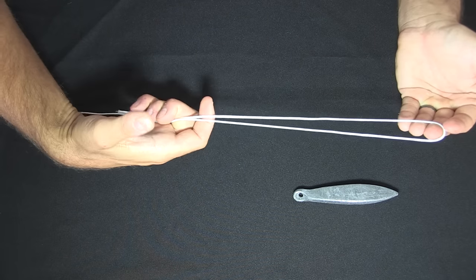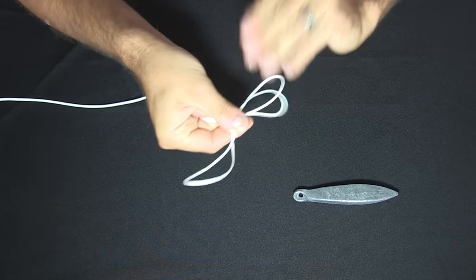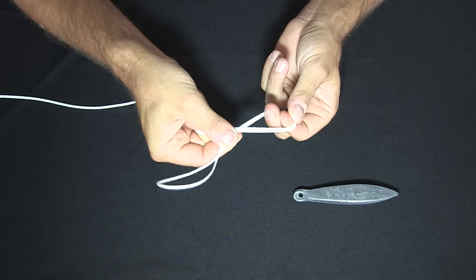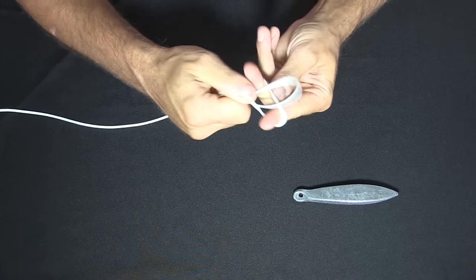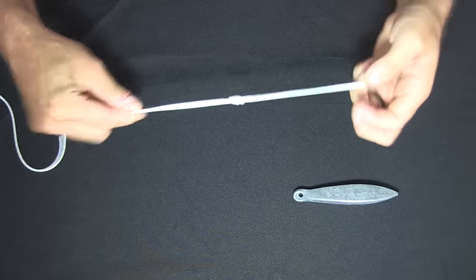We're going to double our line up like so and create another small loop. Twist and feed the end of the first loop back through the second one and pull tight.